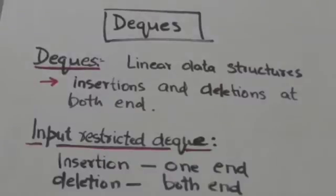Welcome back. In this tutorial, we will study dequeues. Dequeues are linear data structures in which elements can be added or removed at either end but not in the middle. They are double-ended queues.